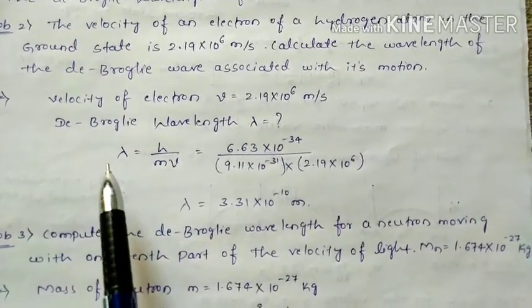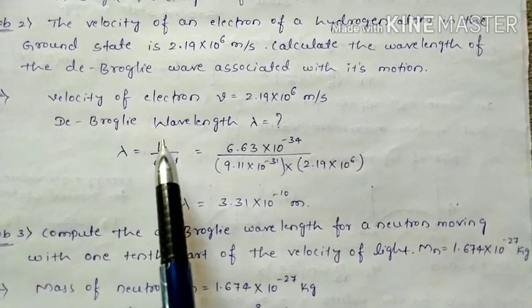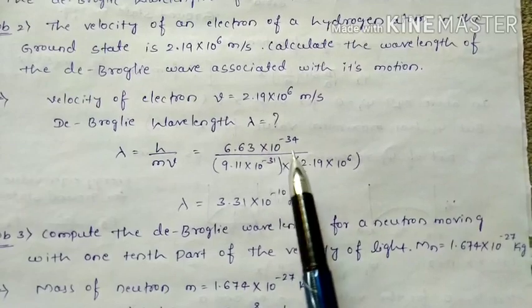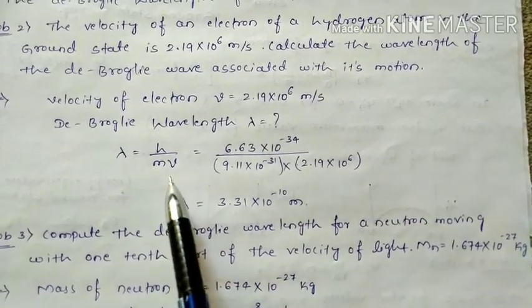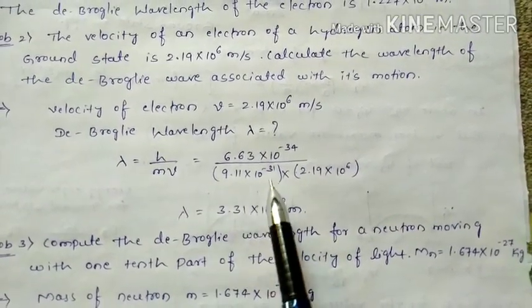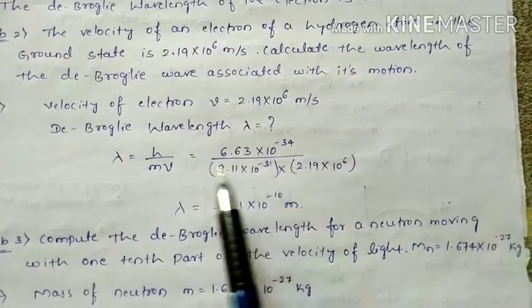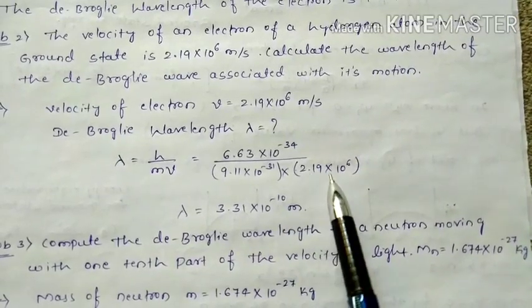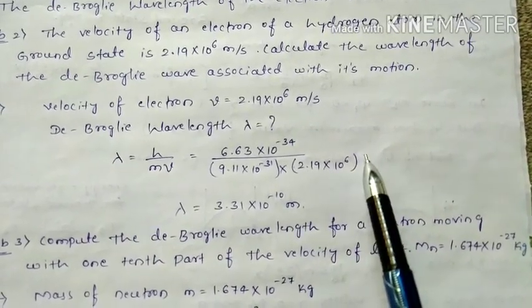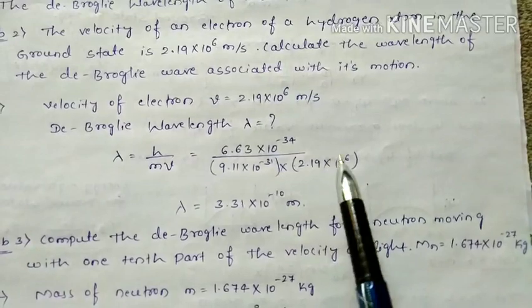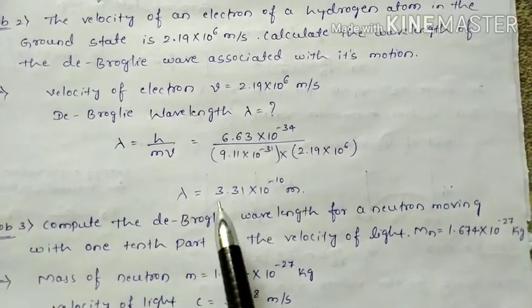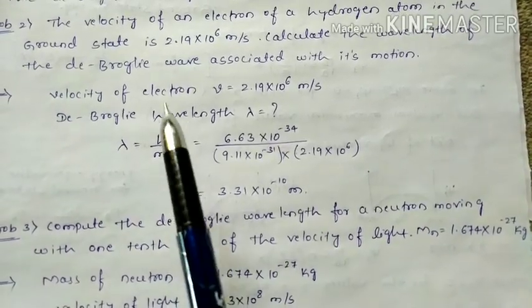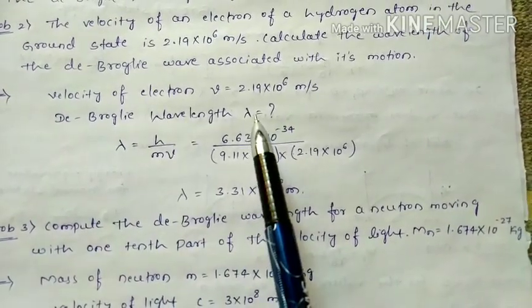Using the equation lambda = h / (m × v): h is Planck's constant 6.63×10⁻³⁴, mass of electron is 9.11×10⁻³¹, and velocity is 2.19×10⁶ m/s. After simplifying, lambda = 3.31×10⁻¹⁰ meter, which is the de Broglie wavelength of that electron.